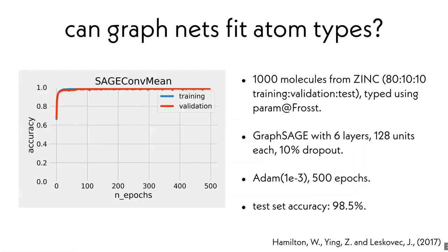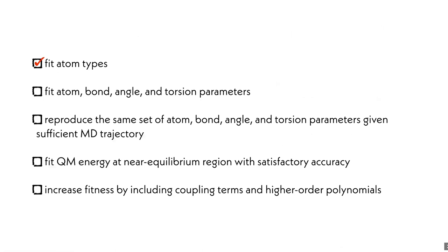So let's test this experimentally. We have a very toy-ish dataset here that consists of 1,000 molecules from the ZINC dataset, split into 80-10-10 training-validation-test. We used an off-the-shelf graph neural net model. If you ignore the 1.5% error rate here, you can say that maybe graph nets can do the task of fitting atom types perfectly.